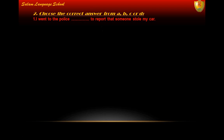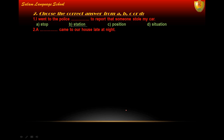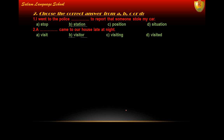Next exercise: choose the correct answer. Number one: I went to the police to report that someone stole my car — a police station. Number two: a visitor came to our house late at night. Number three: young people like to stay in a youth hostel because it is inexpensive.